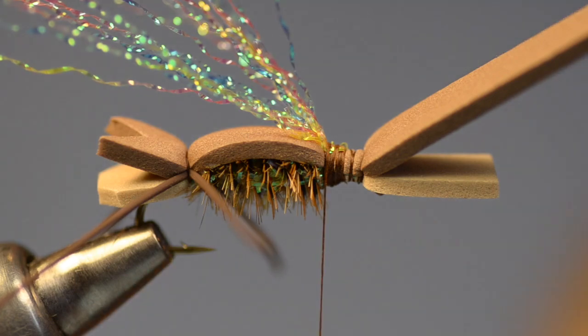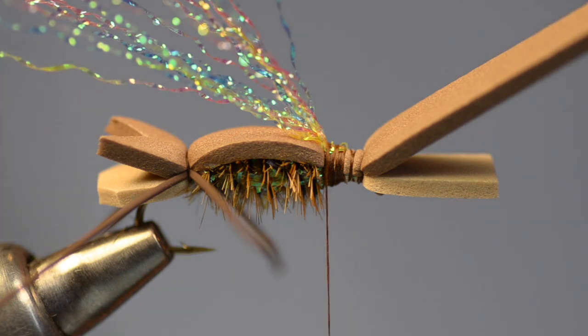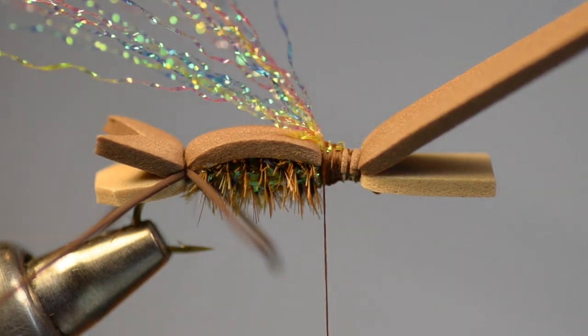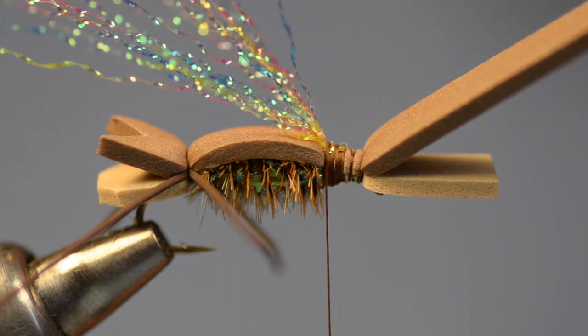And over the top of that, we're going to put a little bit of yearling elk. So I'm going to take a fairly healthy clump here. And I want to clean this out, just like you do all deer or elk hair. And I'll stack this up in my stacker. If you've got the hair well cleaned, you don't really have to pound on it a whole lot.